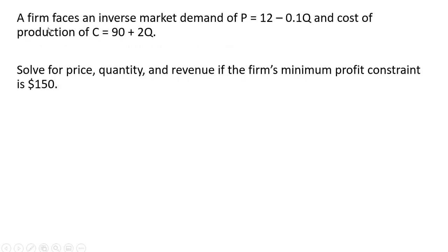Here is a firm that has an inverse market demand of P = 12 - 0.1Q, and a cost of production of C = 90 + 2Q. We want to solve for price, quantity, and revenue if the firm's minimum profit constraint is $150.